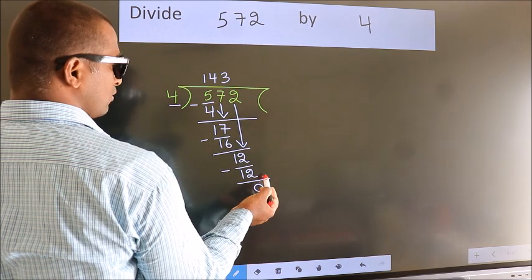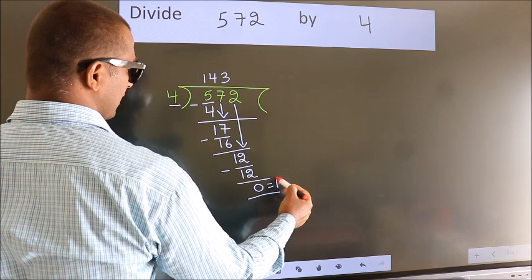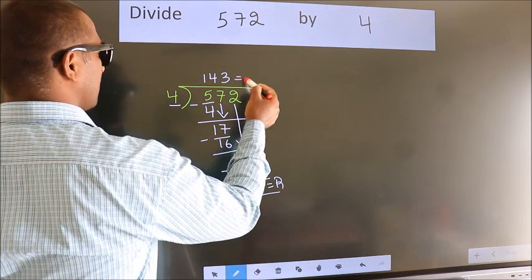No more numbers to bring it down. So we stop here. This is our remainder. This is our quotient.